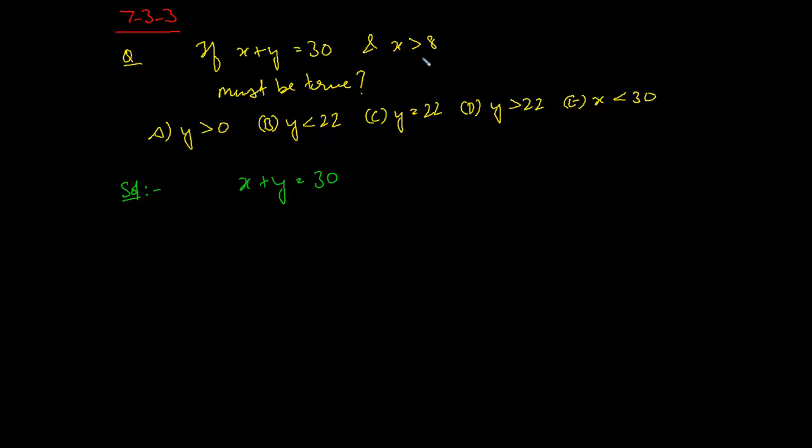So the extreme smallest possible value for x is x equals 8.1. If we put x equals 8.1 in the equation, we get y equals 21.9.